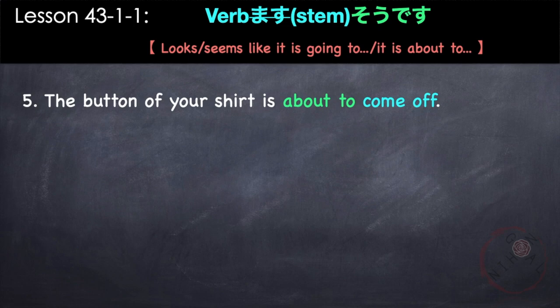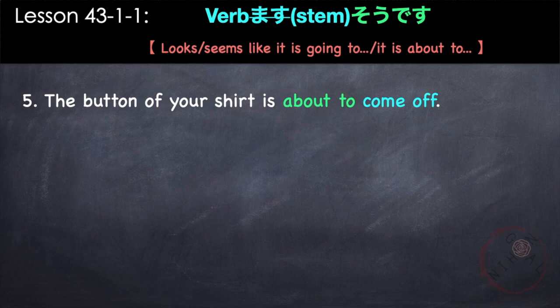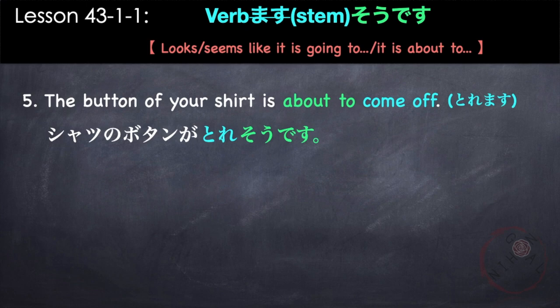'The button of your shirt is about to come off.' The verb is toremasu, to come off. Shatsu no botan ga tore so desu. Shatsu no botan ga tore so desu.